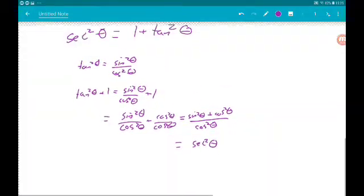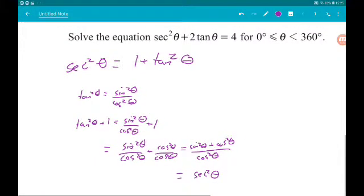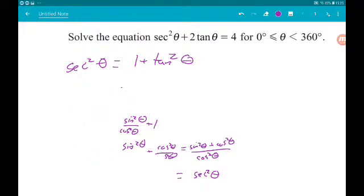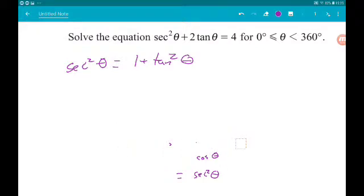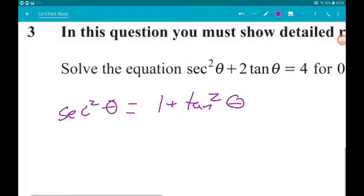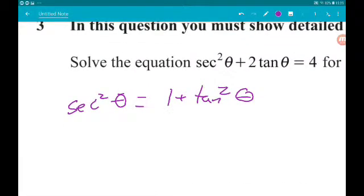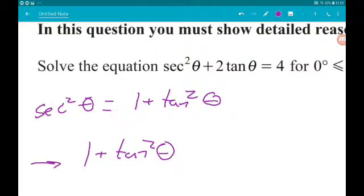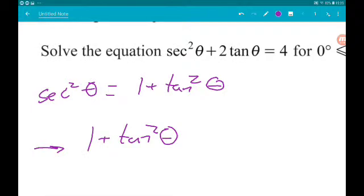So our equation then can become... Let's just clear this up. So our equation in terms of tan is 1 plus tan squared theta plus 2 tan theta equals 4. Now this is a quadratic.